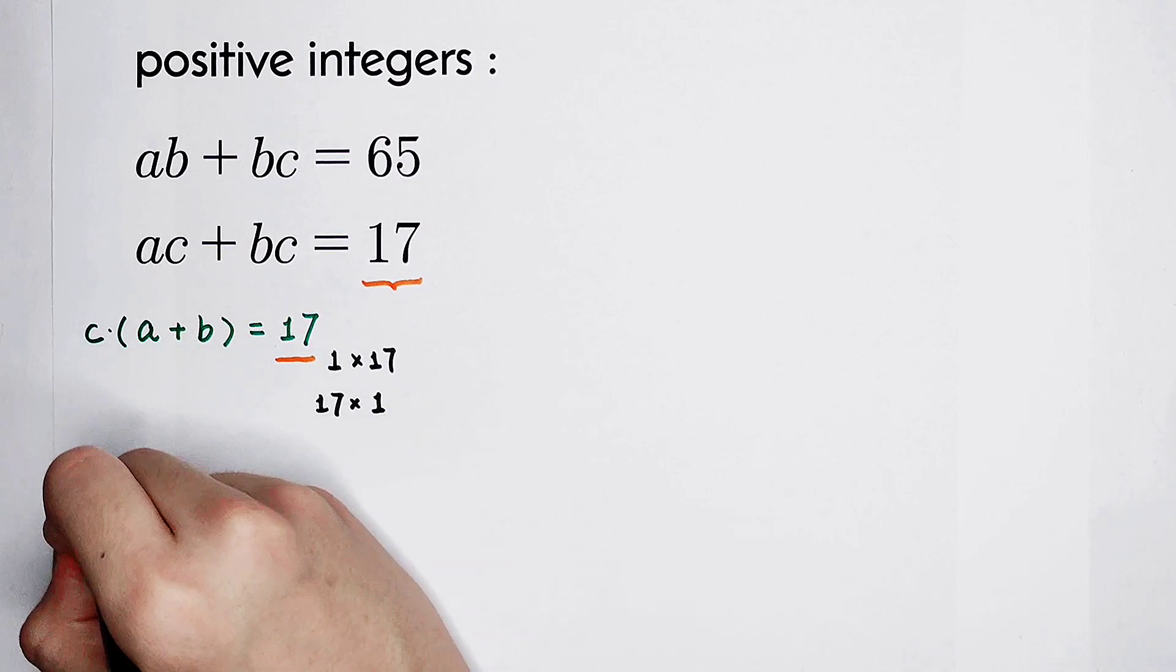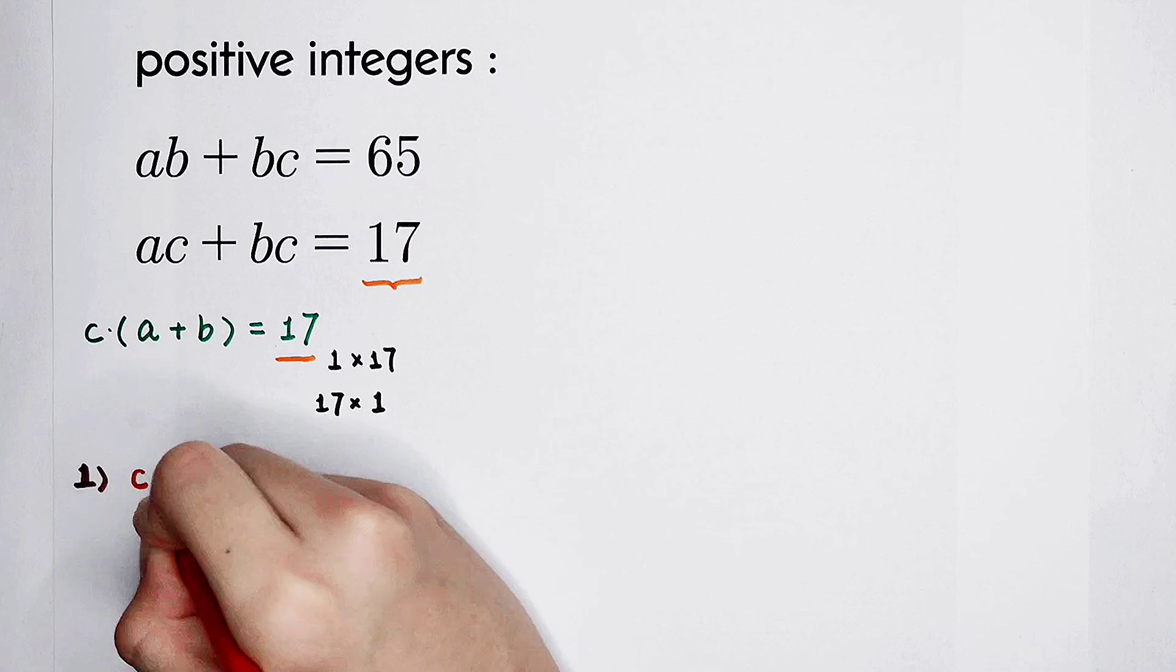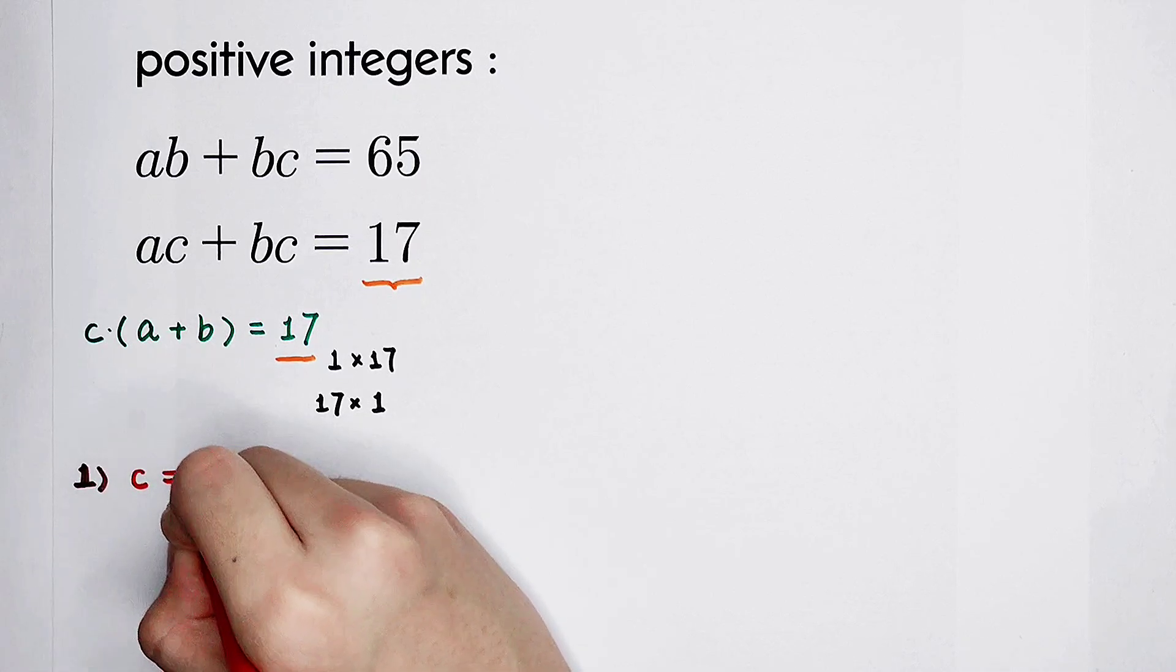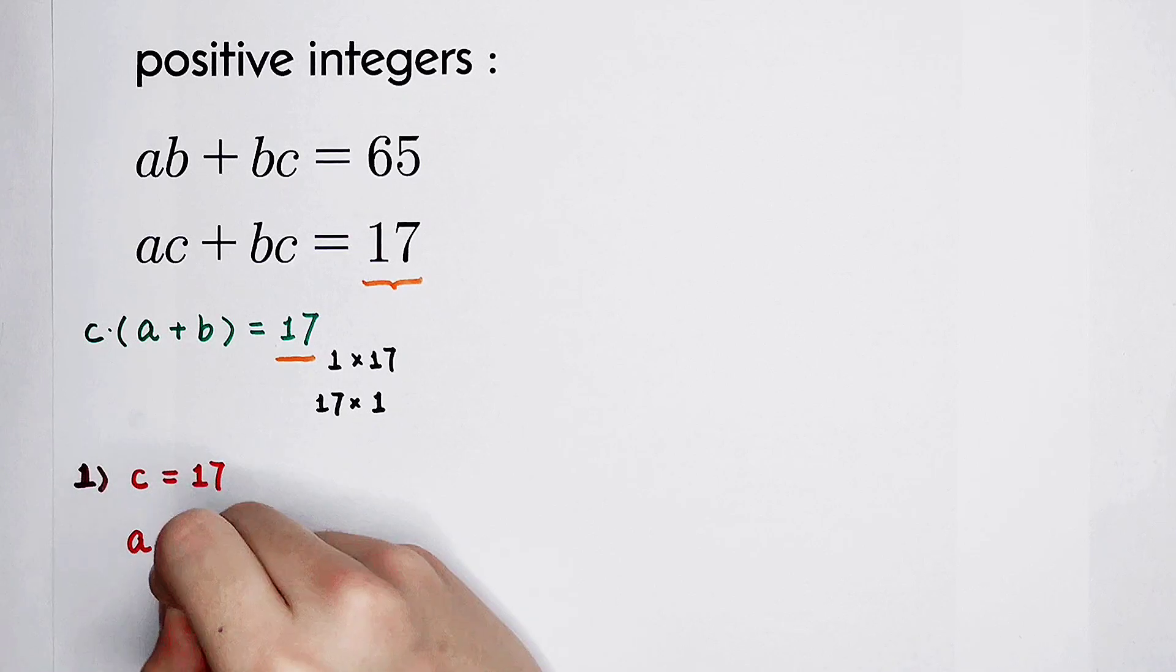Of course, the order of 17 and 1 can also be changed. Then 17 times 1 is also okay. So from here, there are two cases. The first case, when c is equal to 17, and a plus b is 1.